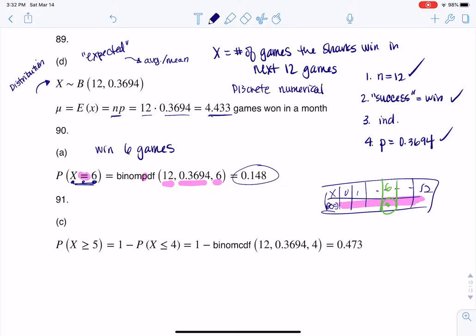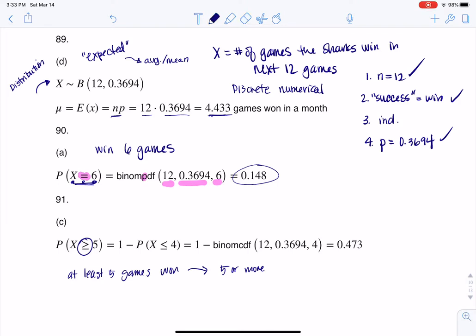And just to round this out, in case you had a question on 91, it says, what's the probability that the sharks win at least 5 games? So if we think about at least 5 games won, if I want to do at least 5, that's like saying 5 or more. But if I want to put it in terms of math symbols, I'm going to use that greater than or equal to.